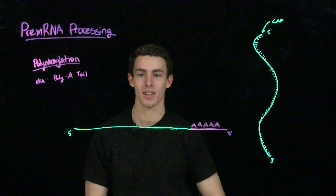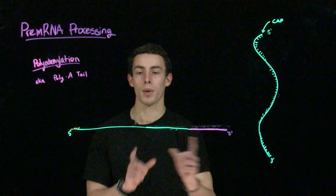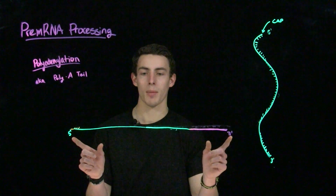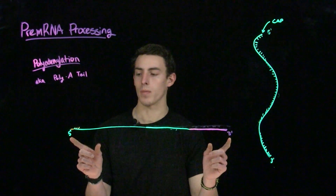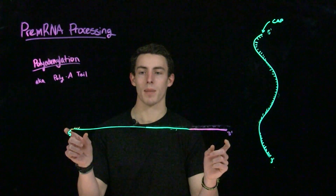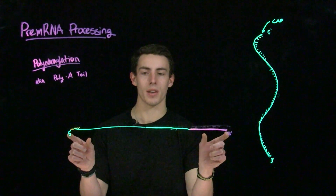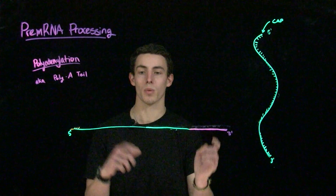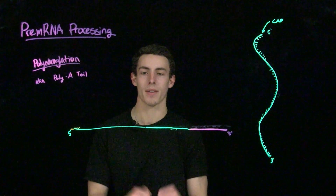That is polyadenylation. Now we have a pre-mRNA molecule with a 5' cap and a poly-A tail, which is ready to be further modified.